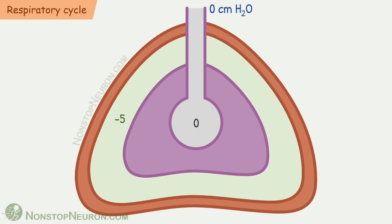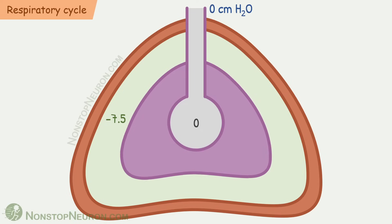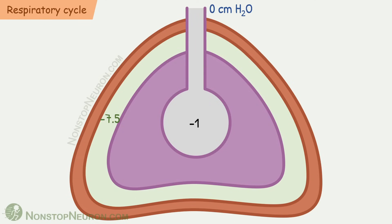Now, inspiration starts with expansion of thoracic cage by inspiratory muscles. This makes the pressure in pleura more negative. After inspiration, it is about -7.5 cm of water. It also expands lungs. Due to expansion, the pressure in alveoli initially falls to -1 cm of water. This vacuum pulls the air from atmosphere. As air enters, the pressure in alveoli increases till it is equal to the atmospheric pressure or 0 cm of water.